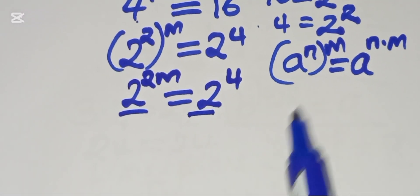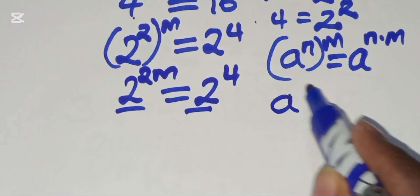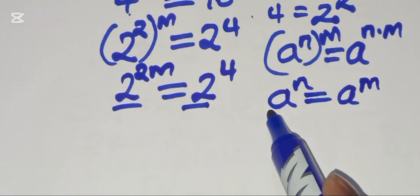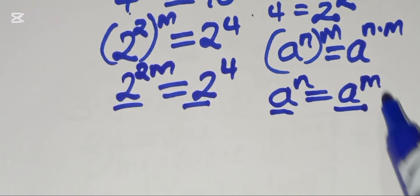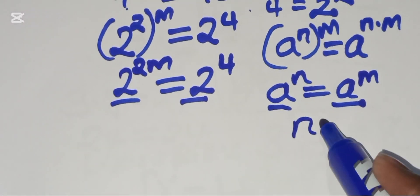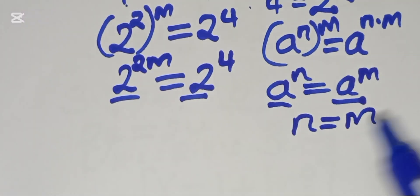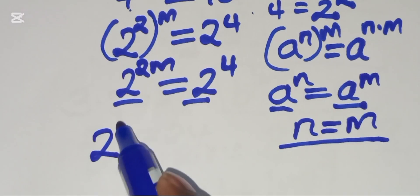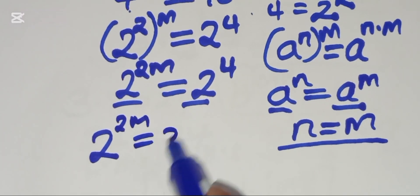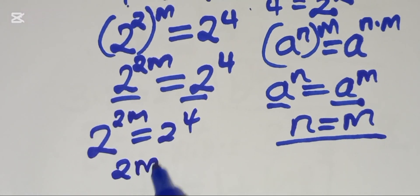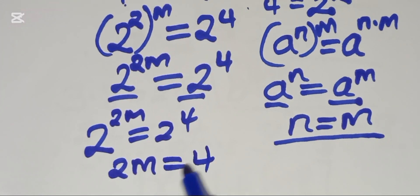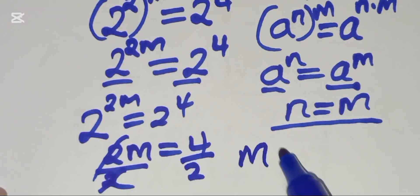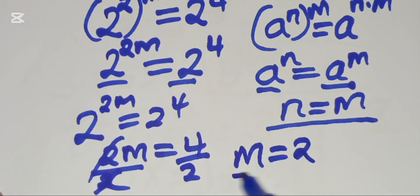Since the bases are common, we use the property that if a^n equals a^m, we can equate the exponents: n equals m. Applying this, we have 2^(2m) equals 2^4, so 2m equals 4. Dividing both sides by 2, m equals 2. That is the value of m from method one.